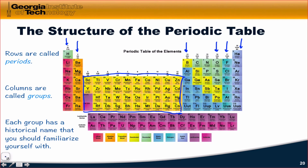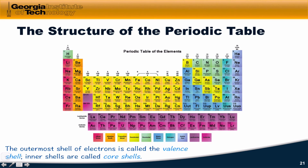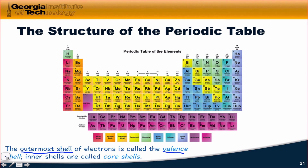Familiarize yourself with these names. We arrange the elements this way so that periodic trends are easy to spot, and we can look at the relative positions of two elements in the periodic table to make predictions about their relative properties. We already saw the importance of the outermost shell of electrons for the halogens. It's called the valence shell because those electrons are used for bonding. The inner shells are called core shells; these contain the electrons that are hardest to remove from the atom because they have the largest Coulombic energy.